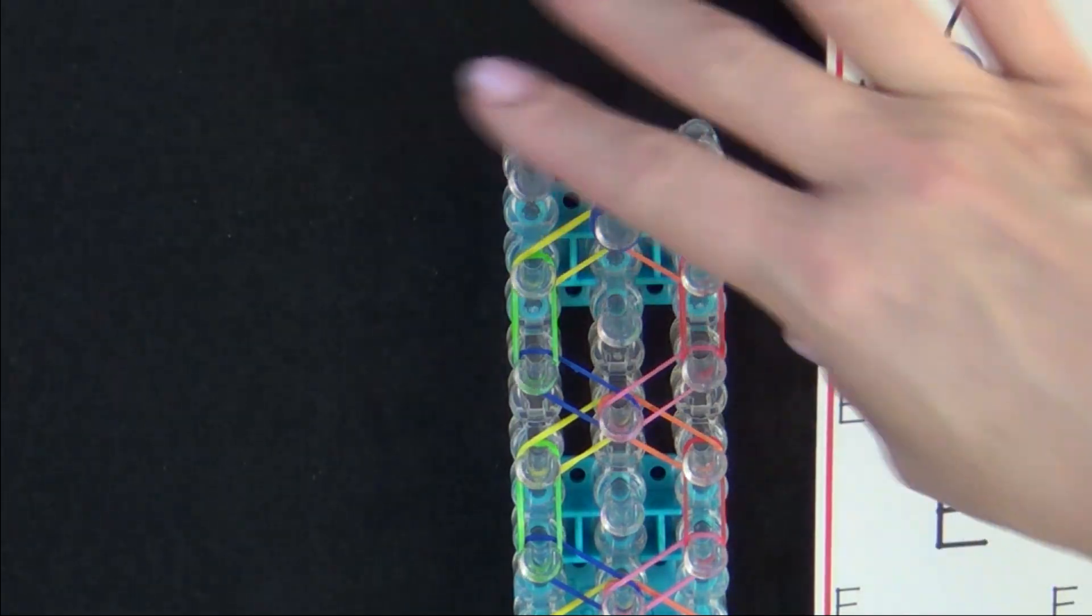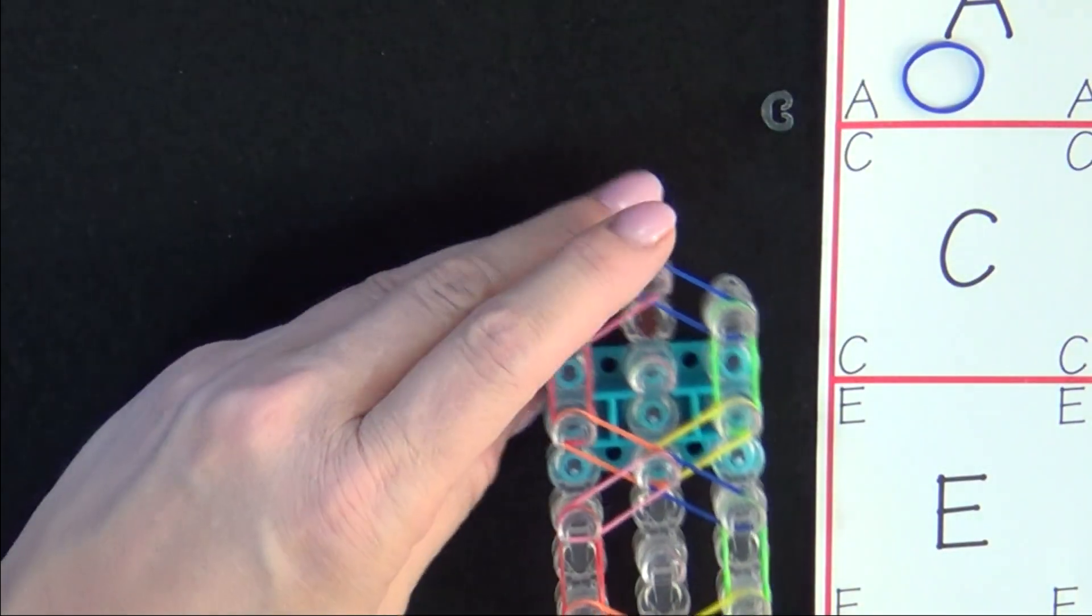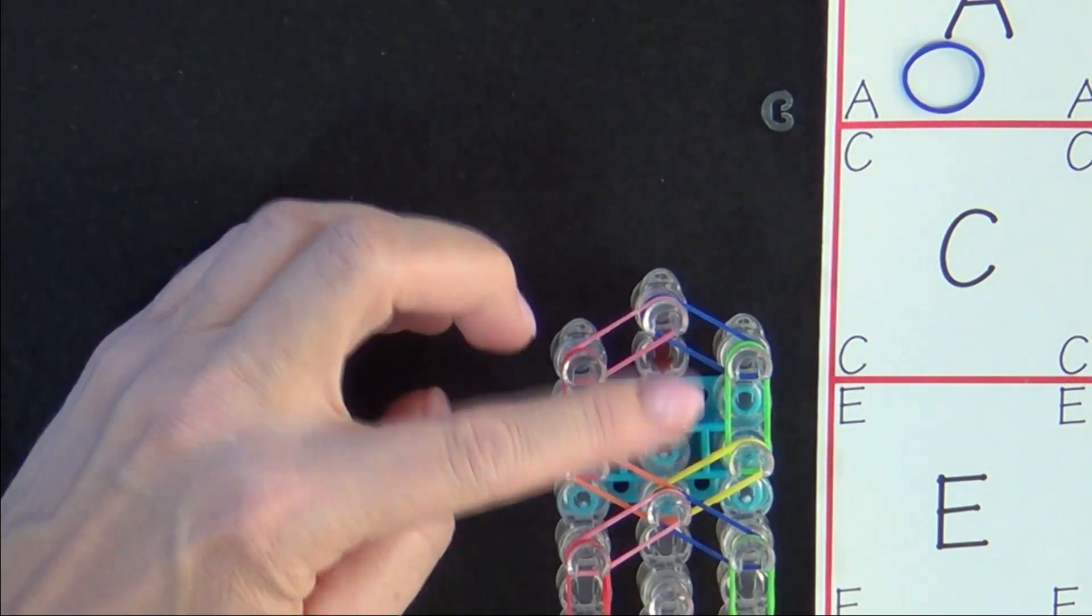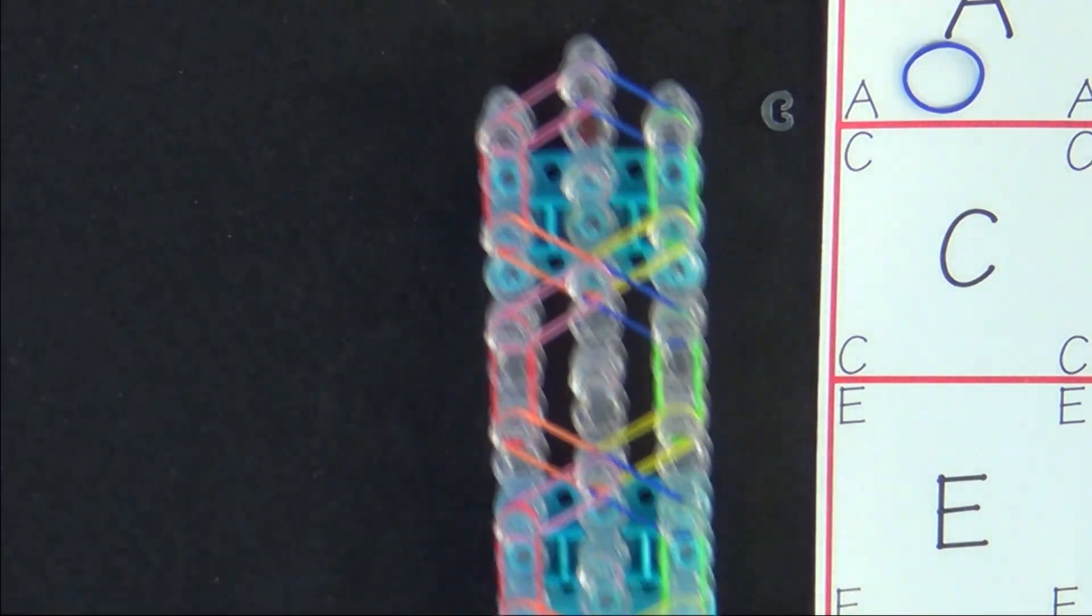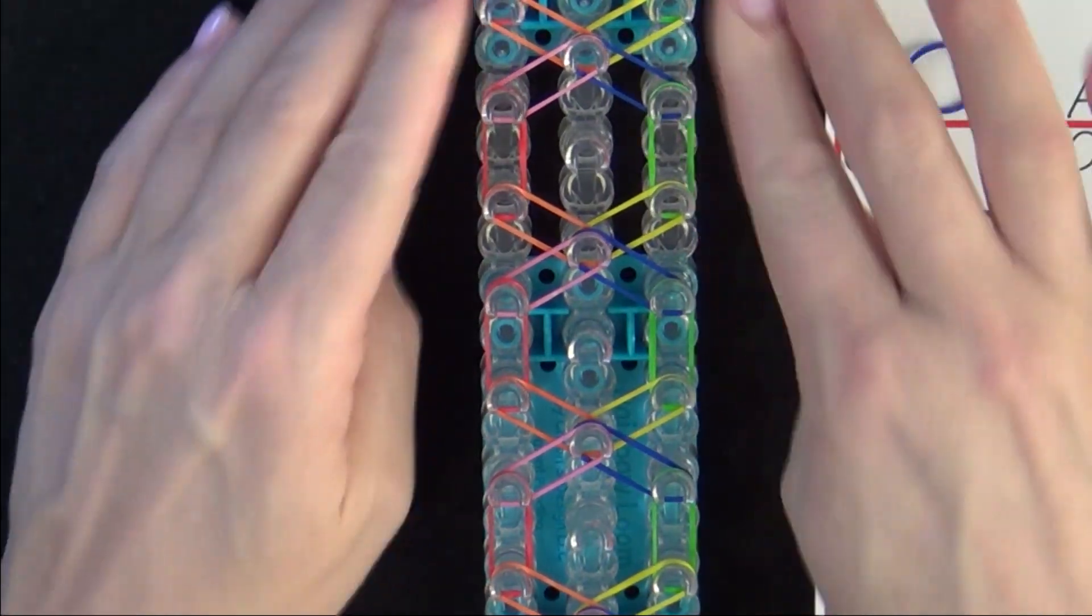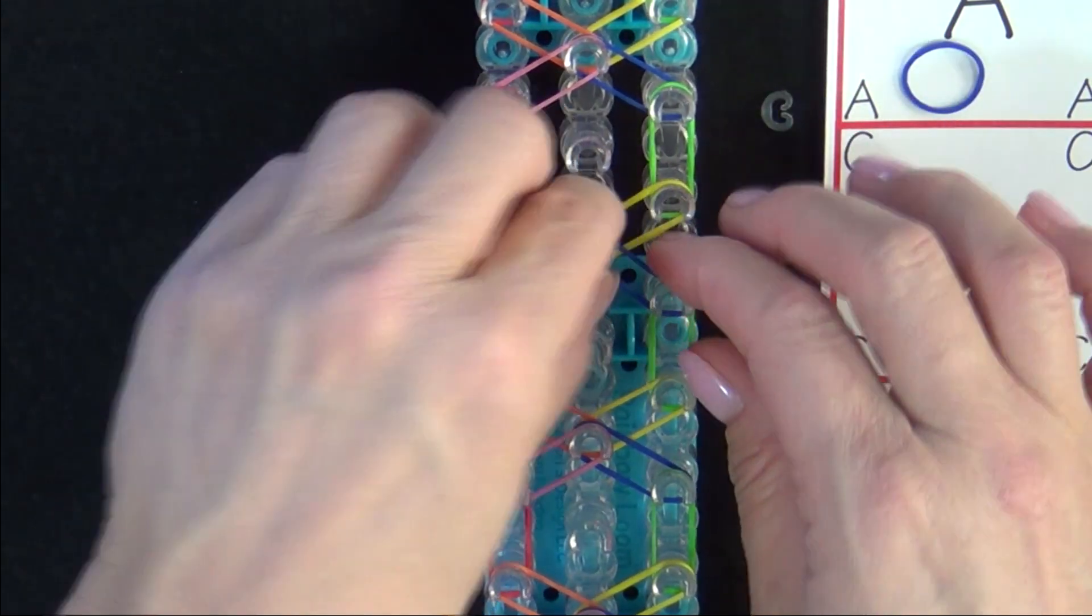Now we're ready to start looping the bands. Turn your loom around so that the red arrow is pointing toward you. This is a good time to push your bands so that they're about halfway down the pin.